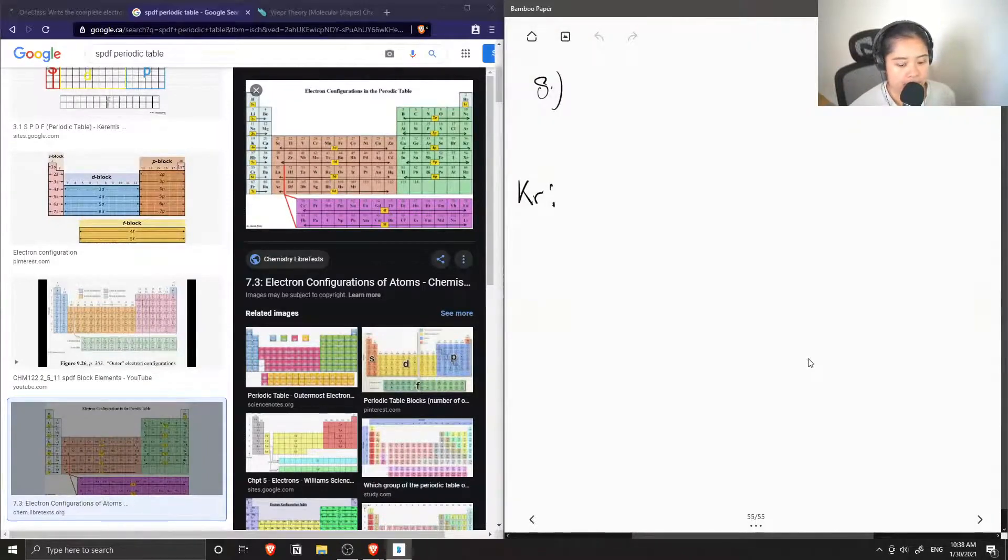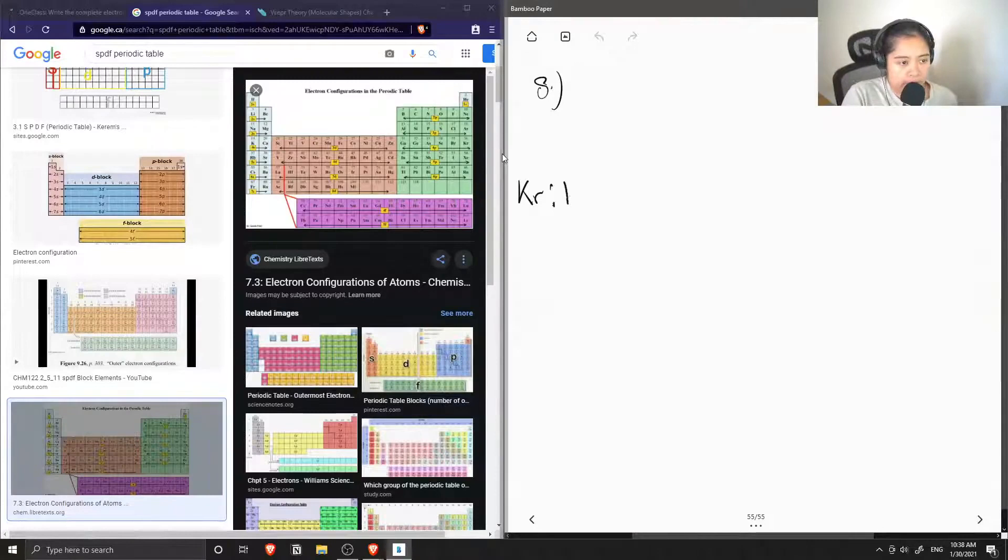So let's look at krypton. Its atomic number is 36, so starting from hydrogen, I write the row number block letter, which is 1s, and then to show how many electrons can fit in the 1s orbital, we put the superscript of 2. So a maximum of two electrons is able to fit in the s orbital.